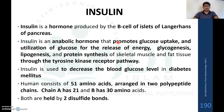What is insulin? Insulin is a hormone which is produced by beta cells of the islets of Langerhans of the pancreas. Insulin is an anabolic hormone which promotes glucose uptake, utilization of glucose for the release of energy, glycogenesis, lipogenesis, and protein synthesis of skeletal muscles and fat tissue through the tyrosine kinase receptor pathway. Thereby, it decreases the free blood glucose level.